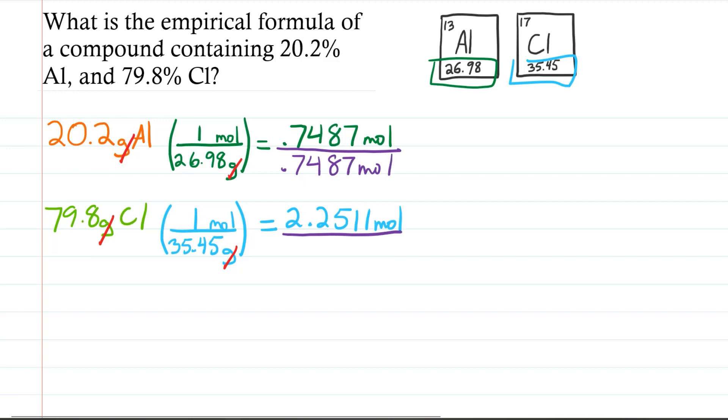And again, down here, same number, 0.7487 moles. Okay? We'll do our math. For aluminum, we're going to get exactly one, because it's the same number on top and bottom. And moles cancel out.